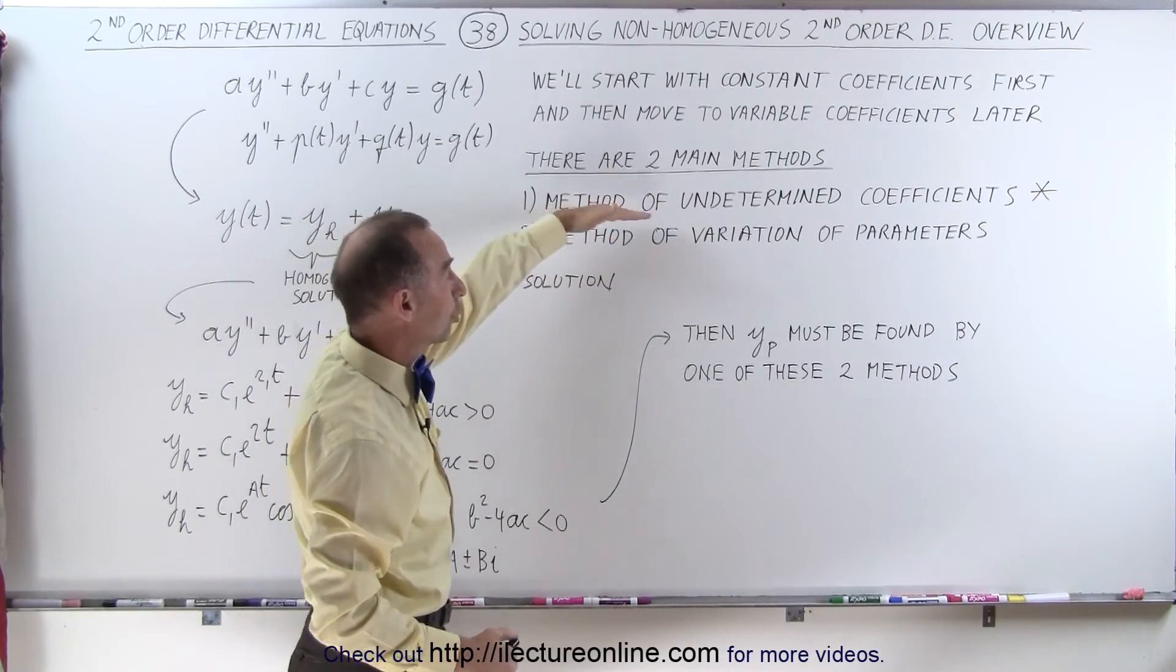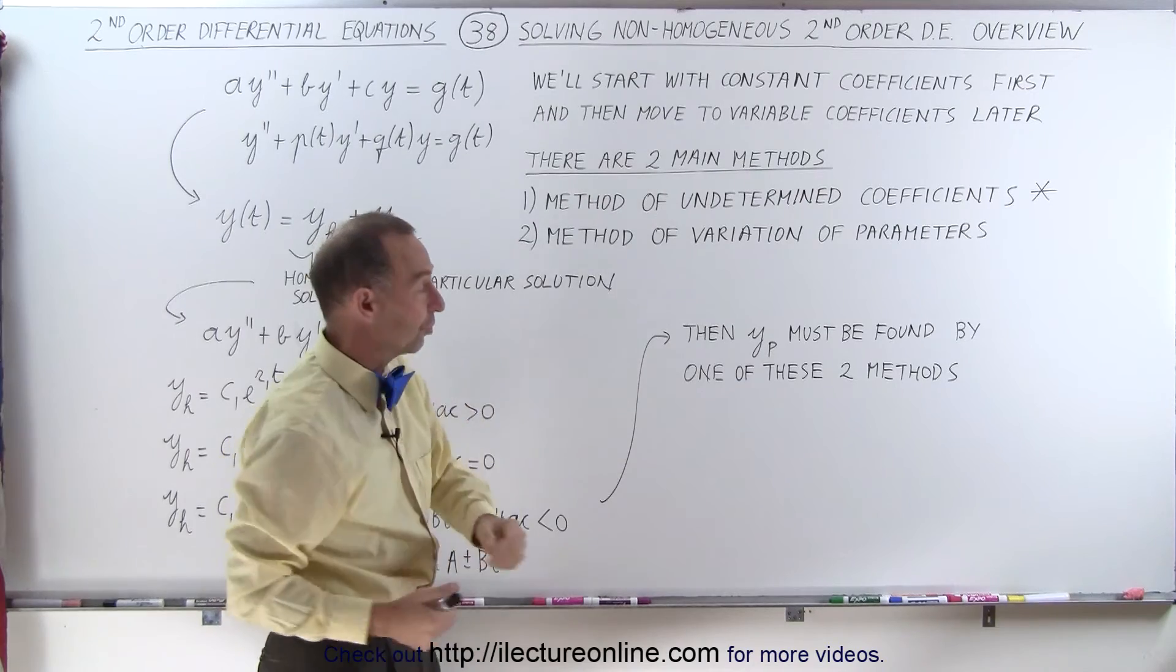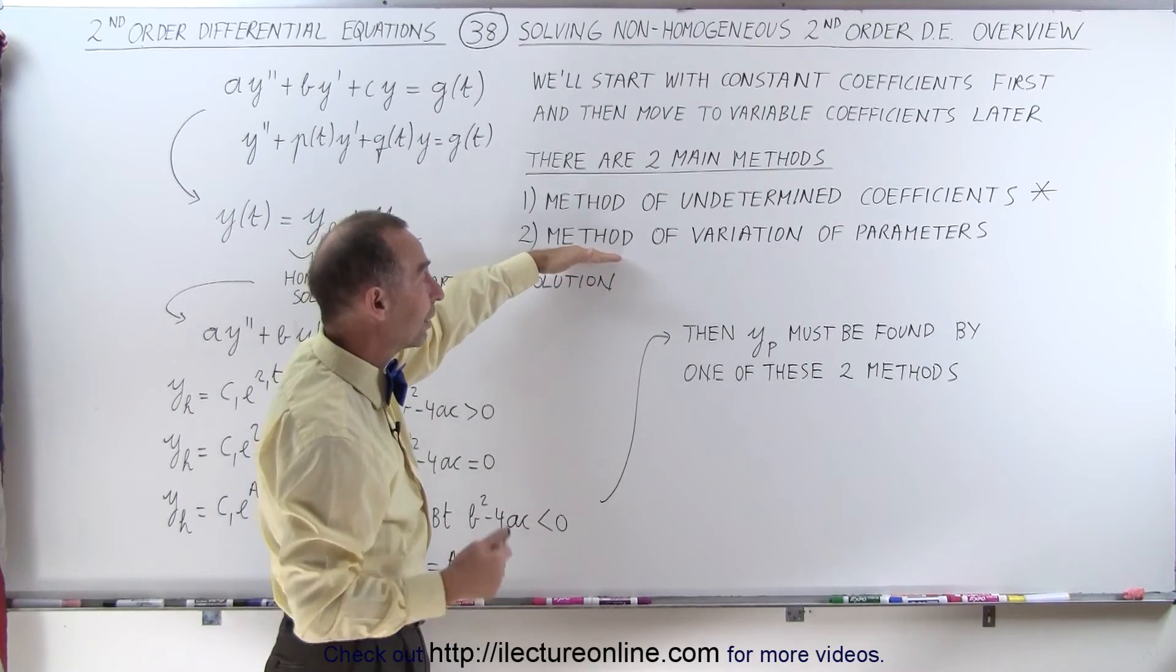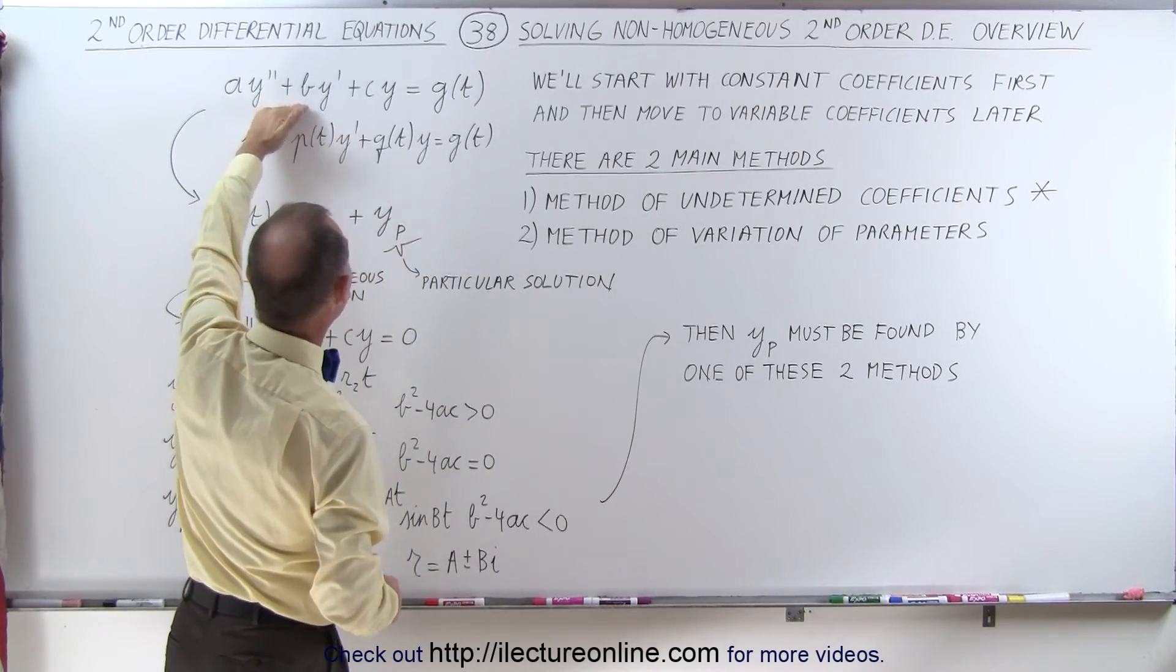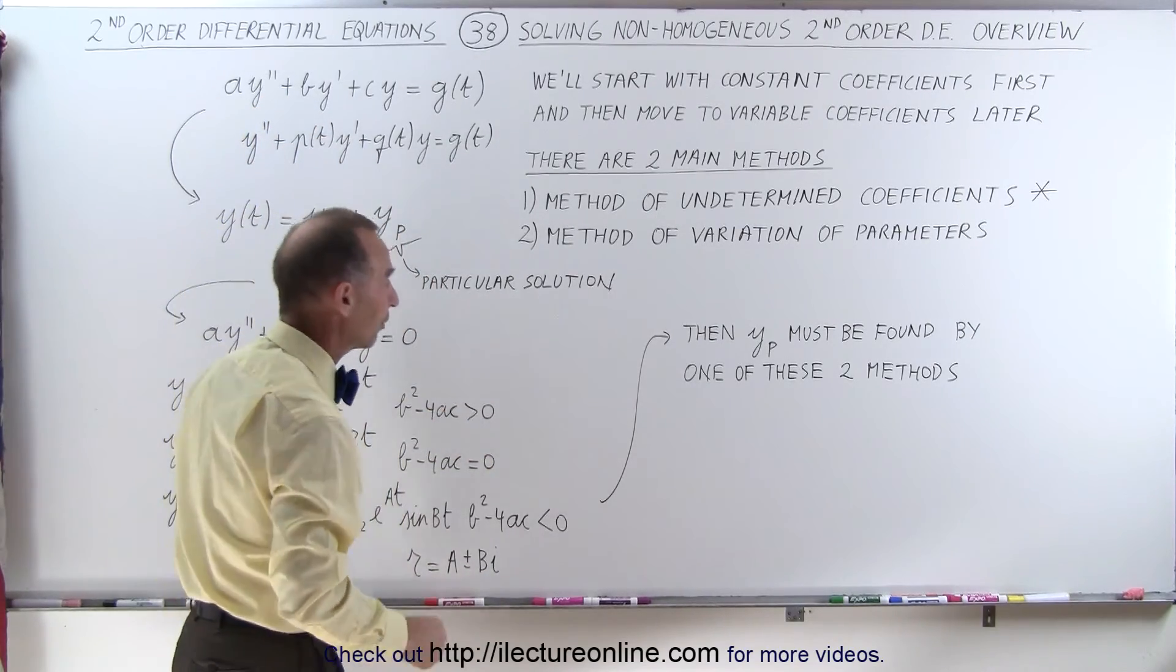Either the method of undetermined coefficients, which is the one we're going to start with, and then later we'll show you how to use the method of variation of parameters, both on equations that have constant coefficients and non-constant coefficients.